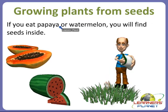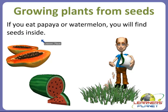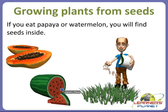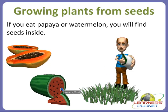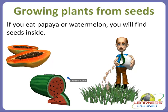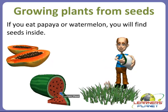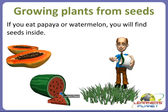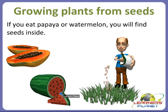If you eat papaya or watermelon, you will find many seeds inside them. So why are they present? Because new plants can grow from these seeds only. Have you ever observed a seed carefully? If you observe any type of seed — for example, if you take a bean seed — what happens?